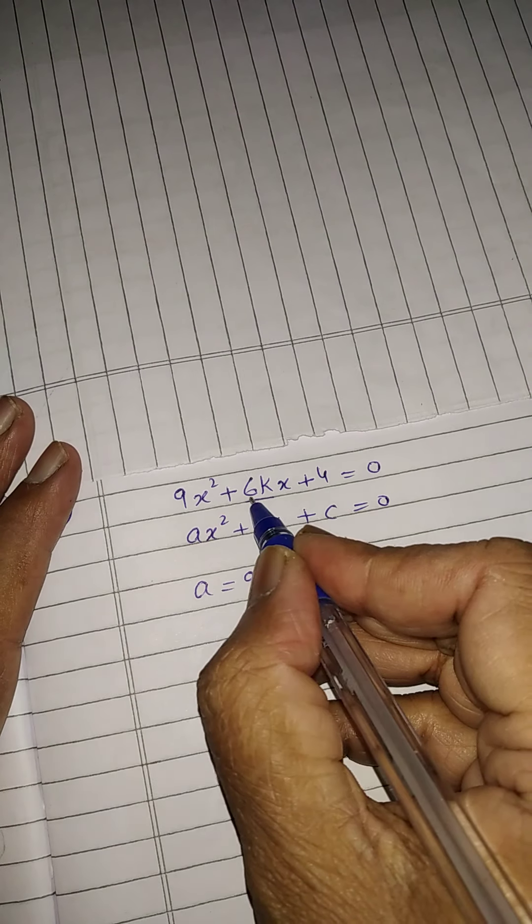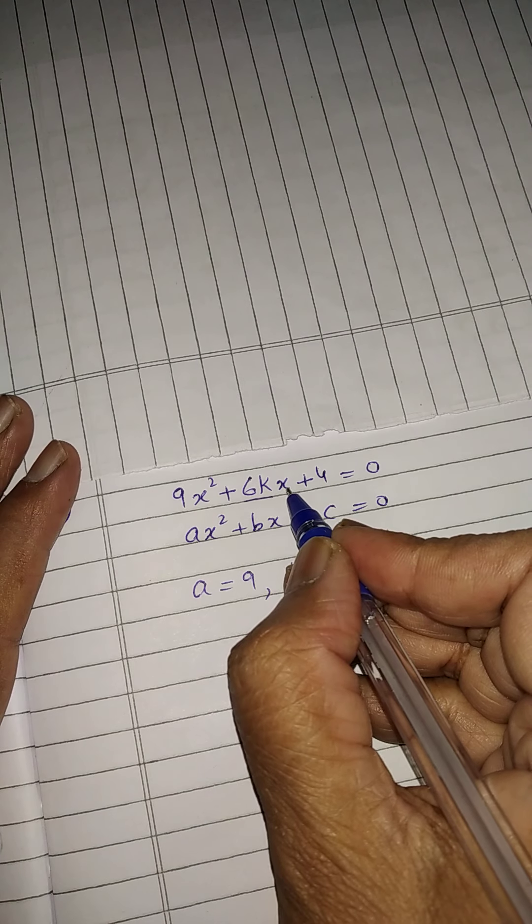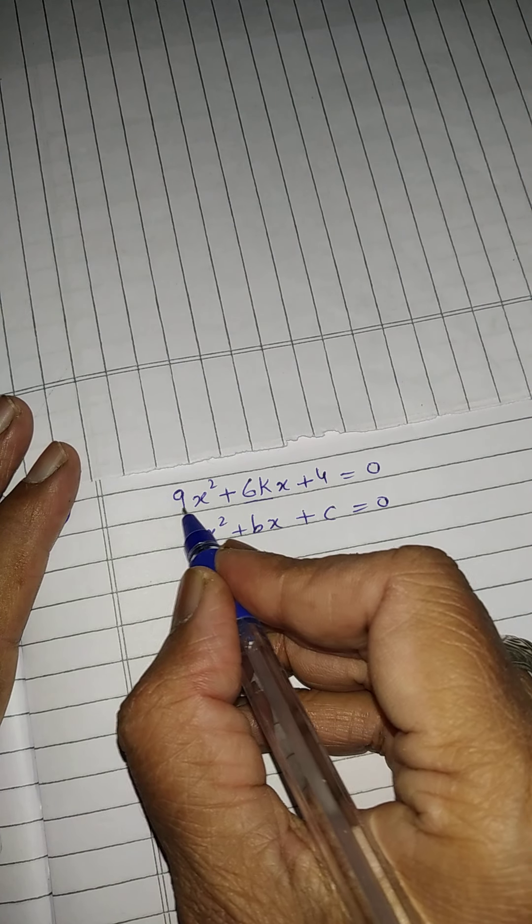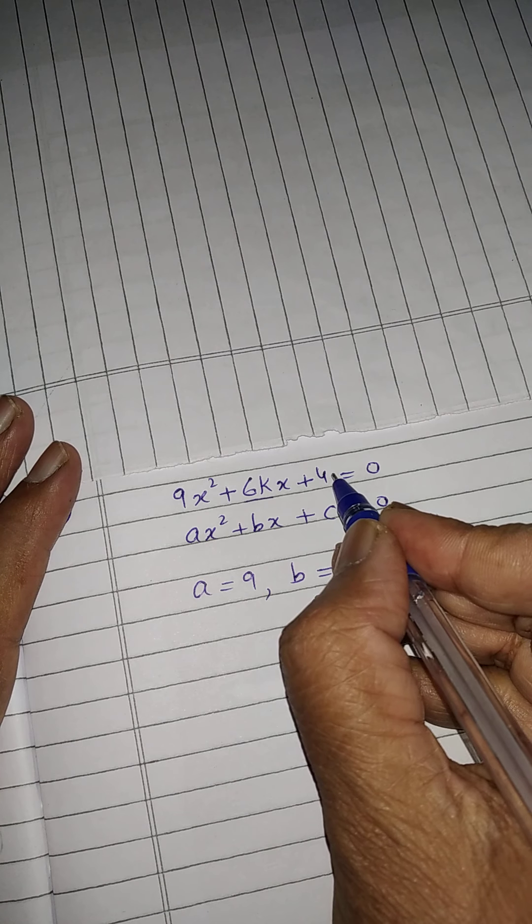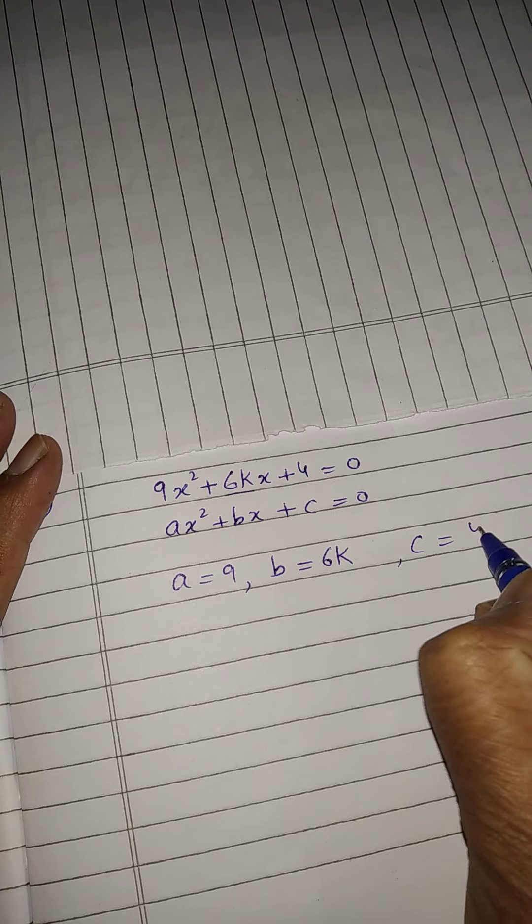Generally, students do mistake, they will take only 6, they forget to take K. So, whatever is with x that will be B. Coefficient of x square is called A, coefficient of x is called B, and without x constant term is called C. So, C is 4.